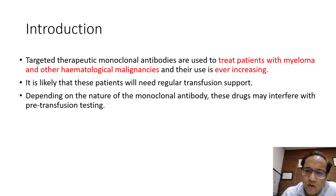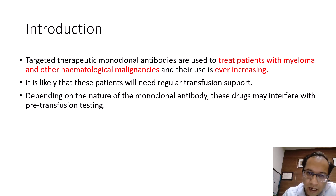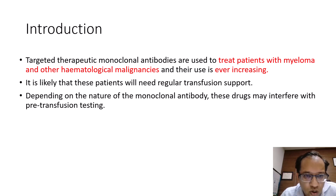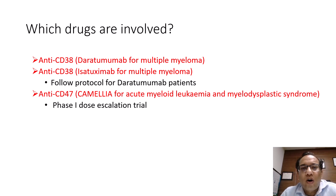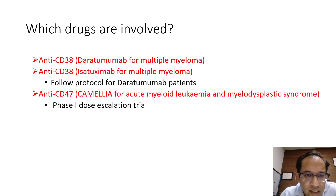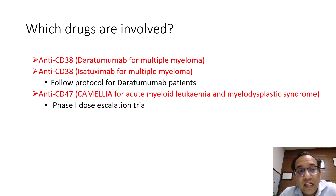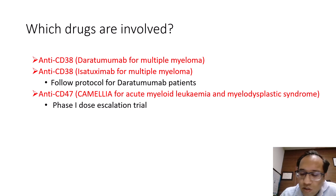Monoclonal antibodies are therapeutic modalities used to treat patients with myeloma and other hematological malignancies, and their use is ever increasing. These patients will likely need regular transfusion support, and depending on the nature of the monoclonal antibody, these drugs may interfere with pre-transfusion testing. Currently the key drugs involved include anti-CD38 agents: daratumumab (DARA-fex/DARA), isotuximab for multiple myeloma, and anti-CD47 agent magrolimab used in acute myeloid leukemia and myelodysplastic syndrome.